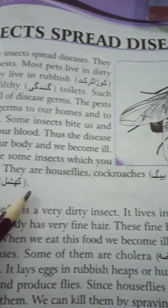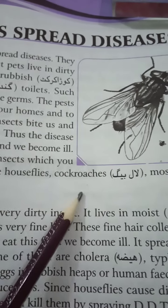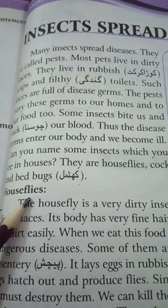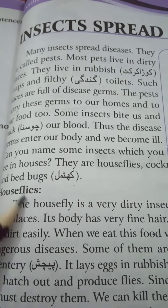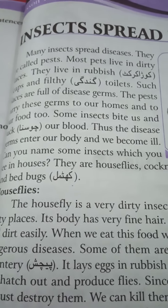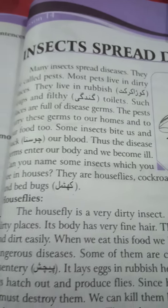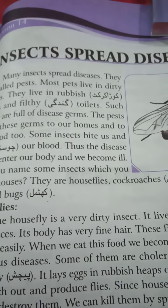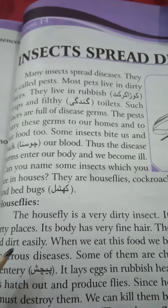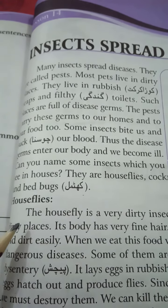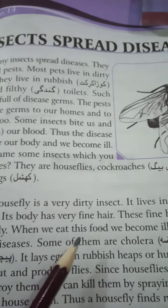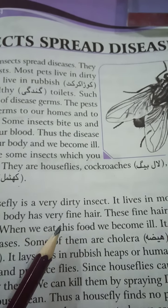These insects bite us and suck our blood. They bite us and suck our blood — for example, mosquitoes bite us and cause malaria and fever. Thus, the disease germs enter our body and we become ill. (بیماریوں کے جراثیم ہمارے جسم کے اندر داخل ہو جاتے ہیں اور ہم بیمار پڑ جاتے ہیں۔)